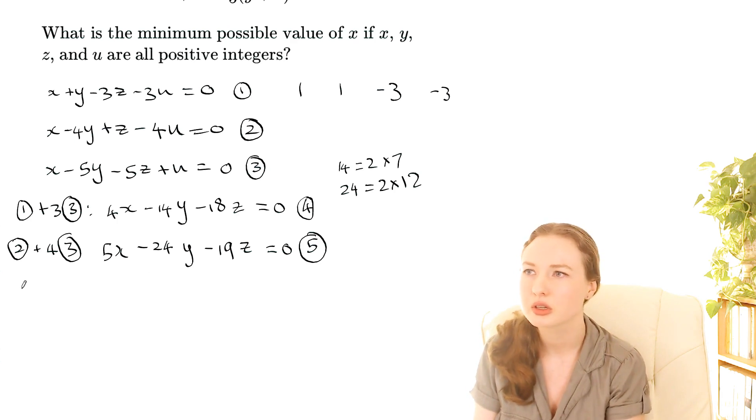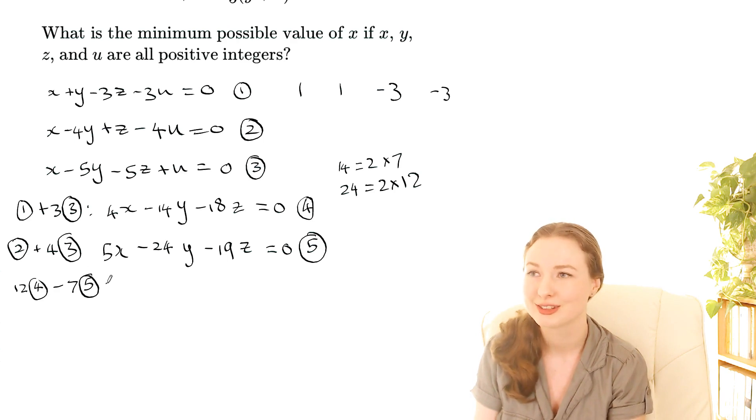So I want 12 times this one, so 12 times equation 4 and then minus 7 times equation 5, and that should get rid of the y's. Okay so we've got 12 times this so 48 minus 7 times this is 35, so 48 minus 35 is 13x. Those will cancel and then we're not allowed calculators for this exam so I'll just have to do 12 by 18. I don't know my 12 times tables.